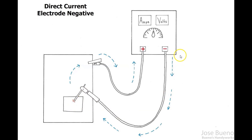An easy way to think about this is to look at the flow of current - it flows through the electrode cable from the electrode and then goes through the workpiece, coming from the electrode into the workpiece. Remembering that helps commit to memory the concept that there's going to be more heat focused on the workpiece than on the electrode. With DC EN, two-thirds of the heat is focused on the base metal and the remaining one-third of heat is on the electrode.